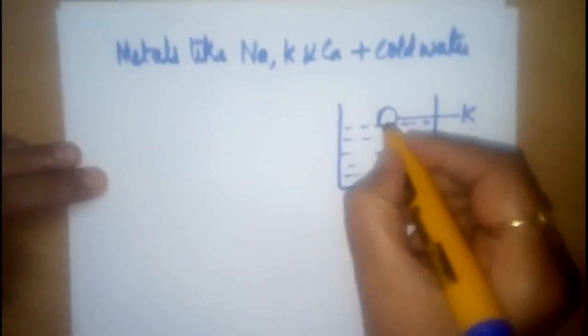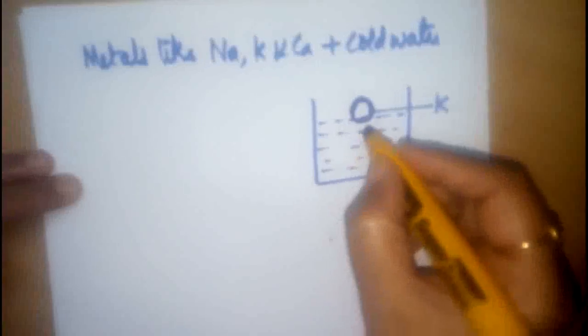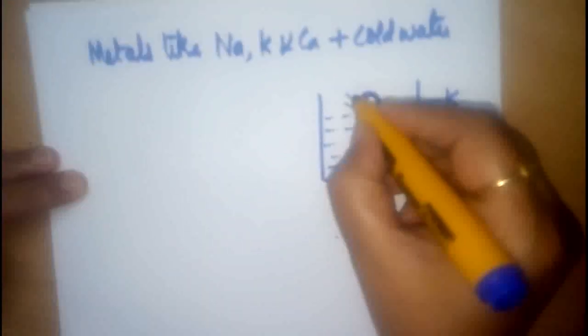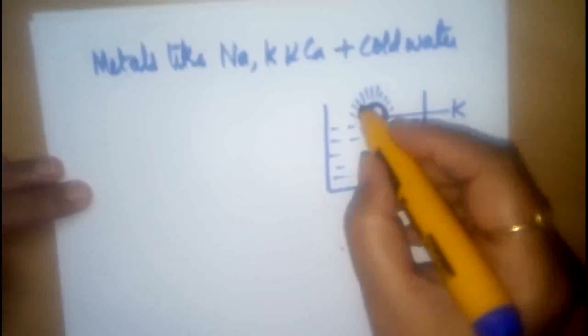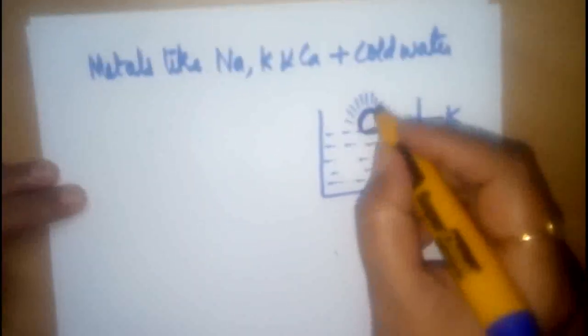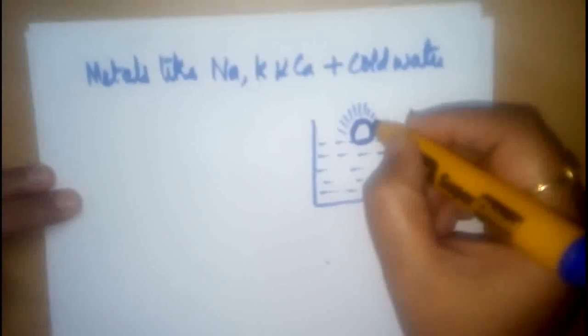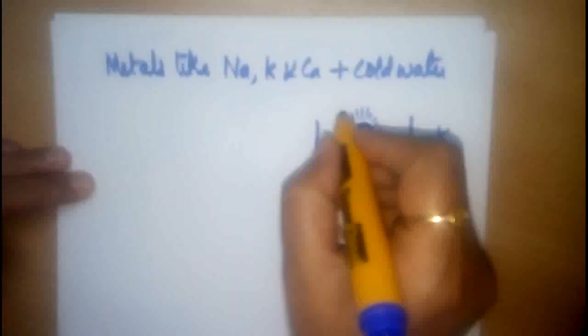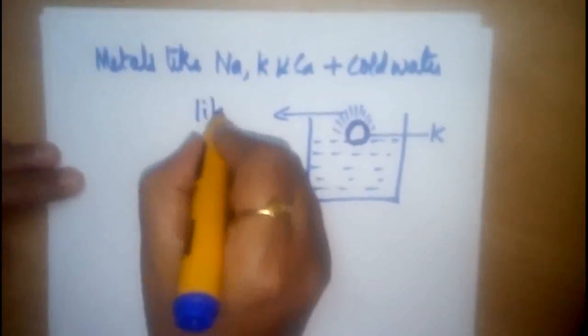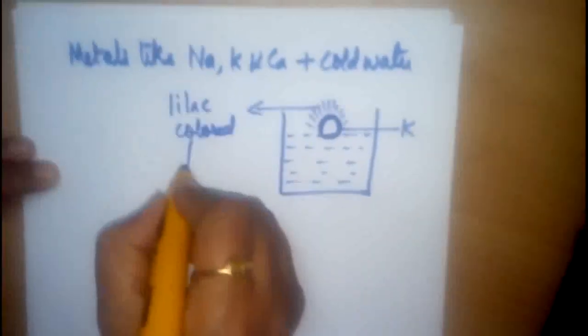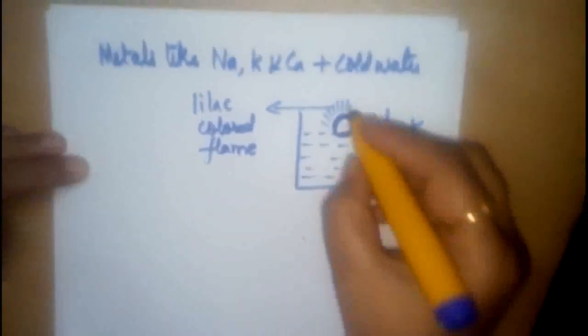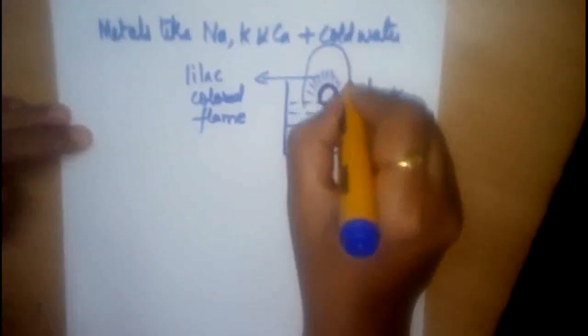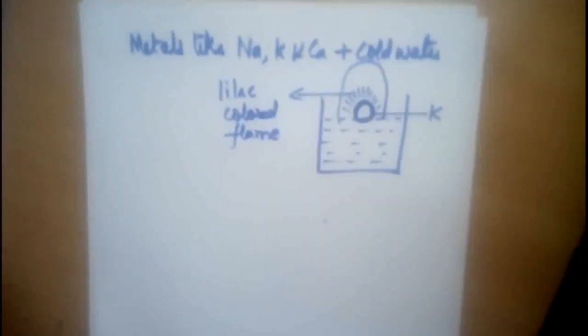It floats on water, then it starts forming grey globule. It forms grey globule and it also darts on surface of water. Darts means it is an explosive reaction. It burns in air and burns with a lilac-coloured flame.